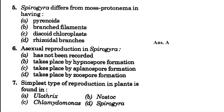Asexual reproduction in Spirogyra is — blank. It has not been recorded; it takes place by hypnospore formation; it takes place by aplanospore formation; or it takes place by zoospore formation. The answer is option C — it takes place by hypnospore formation.